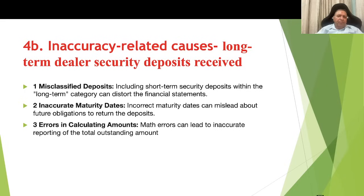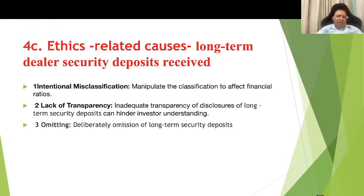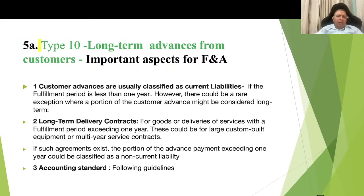Inaccuracy-related causes for long-term dealer security deposits received: number one, misclassified deposits — short-term security deposits treated as long-term or vice versa; number two, inaccurate maturity dates; number three, errors in calculating the amount. Ethics-related causes are similar: intentional misclassification, lack of transparency, and omitting some of the deposits taken.